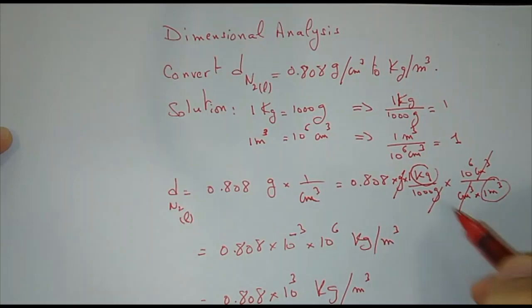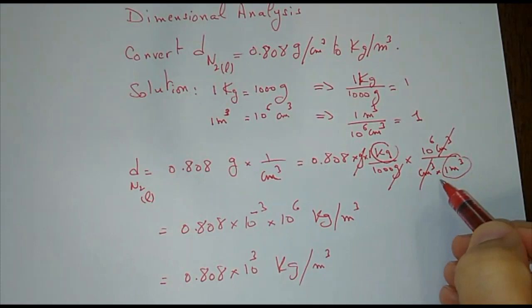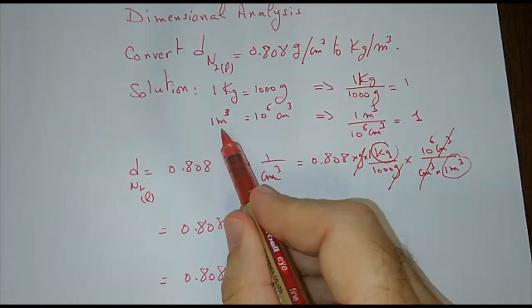And then I multiply by 1 over centimeter cubed. To get rid of centimeter cubed, what shall I do? Now I need to multiply by a ratio that's equal to 1 and it has centimeter cubed in the bottom and meter cubed on the top. So from this equation, how to get centimeter cubed in the denominator? I just bring it down.